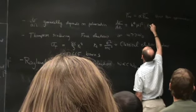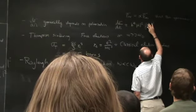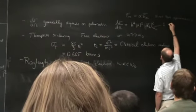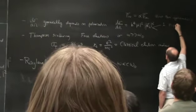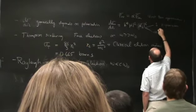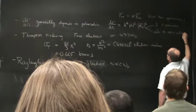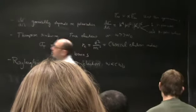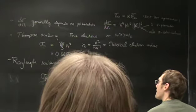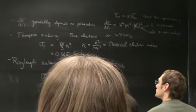It just depends on the component of the incident polarization squared. This is 1 if we have so-called sigma polarization, and equals cosine-squared theta if we have so-called pi polarization. That is, if our polarization was in the plane of incidence we called it pi, and if it was perpendicular to the plane of incidence we called it sigma.